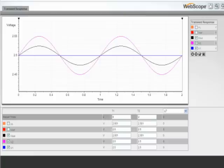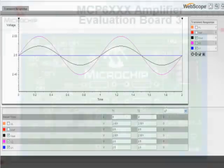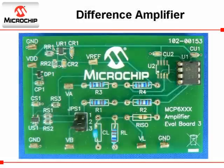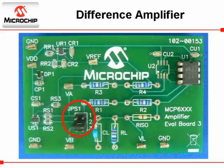The graph simulates the performance of the MCP6021 when configured as a difference amplifier. We will now look at the same difference amplifier design built with the MCP6X Amplifier Evaluation Board 3 using the MCP6021 and resistor and capacitor values suggested in Mindy.